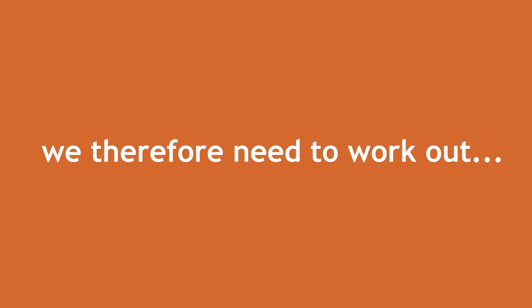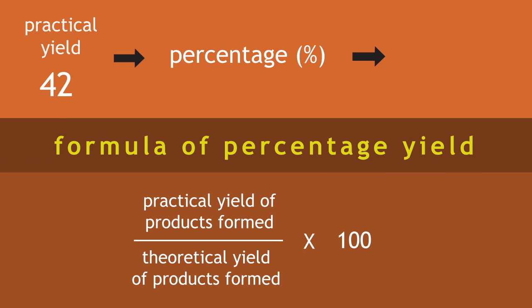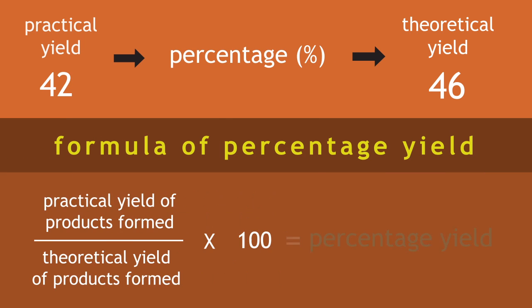We therefore need to work out 42 as a percentage of 46. This will show us the percentage yield.